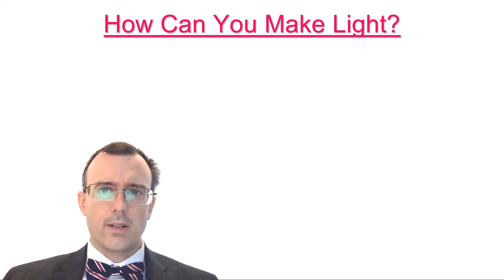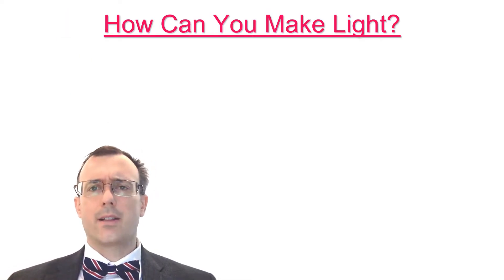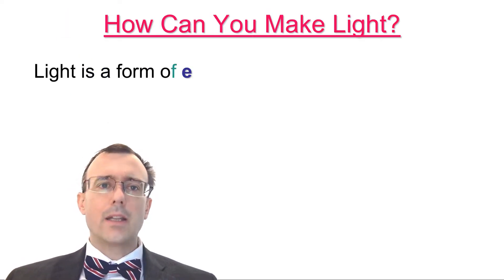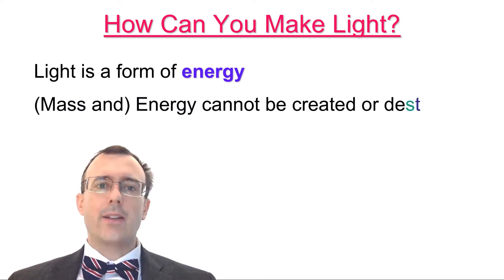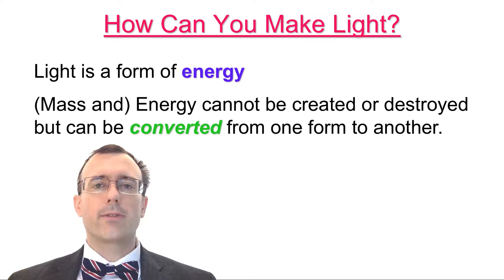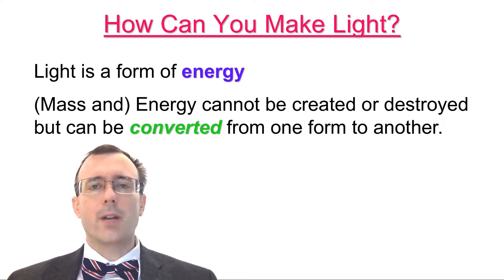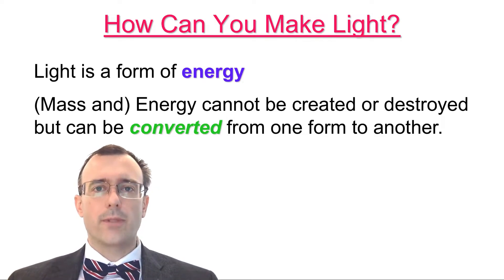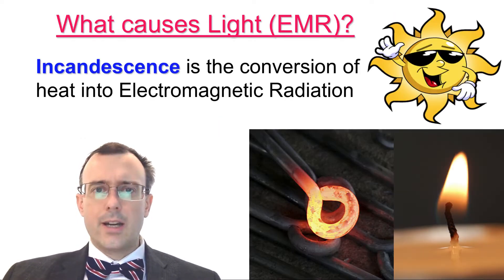Let's start off with a question: how can you make light? We remember that light is just a form of energy, and that energy cannot be created or destroyed, but can only be converted from one form to another. So when you make light, you need to get it from some other form of energy. You can't just create it out of nothing.